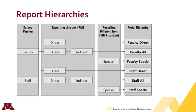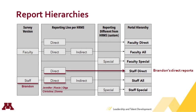To give you an example of how this works, let's look at LTD. Brandon Sullivan has five direct reports: Jennifer Engler, Rosie Berry, Olga Alepova, Christina McGuire, and Donna Satoff. Assuming they all took the survey, their responses would be included in the staff-direct hierarchy. Some of Brandon's direct reports also have people reporting to them. Their responses, in addition to his direct reports, are included in the staff-all hierarchy. So the full LTD team rolling up to Brandon is included in staff-all.